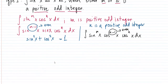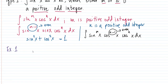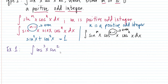To demonstrate the theorem using an example — Example 1: we are integrating cosine raised to 3 times x, times sine squared x, differential x. This is an example under Type 1 because we have a positive odd integer, which is 3.